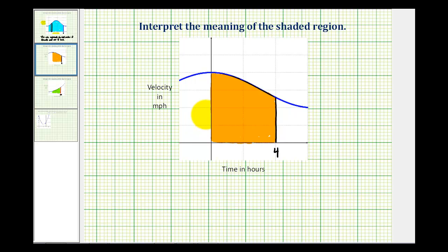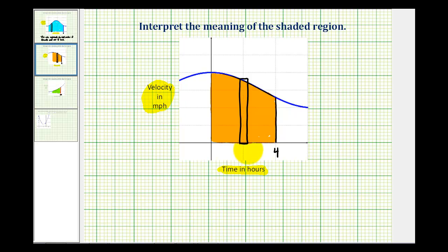For the second example, notice that the x axis represents time in hours again, but now the y axis represents the velocity in miles per hour. If it's helpful, we can take a slice of this area, and then to determine the area of this rectangle, we multiply the width — the time in hours — times the height, which would be the velocity in miles per hour. Velocity is a rate, and when we multiply rate and time, we actually get distance. So this orange shaded region represents the total distance traveled over four hours.